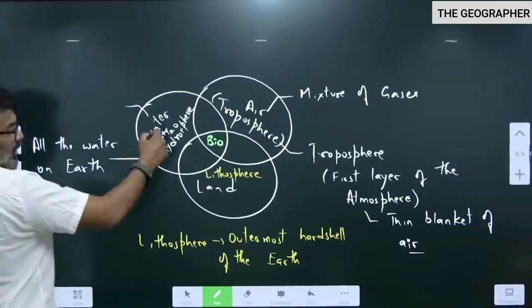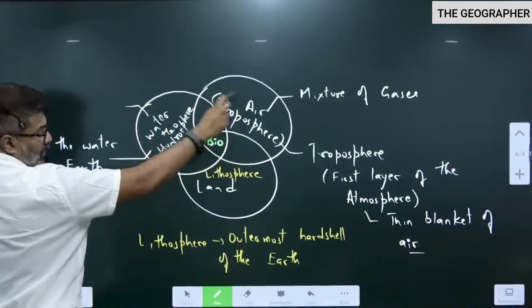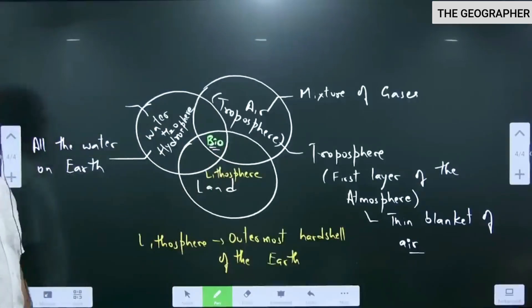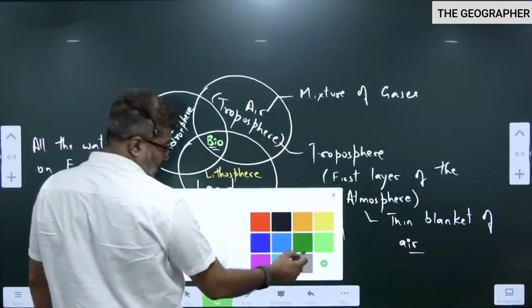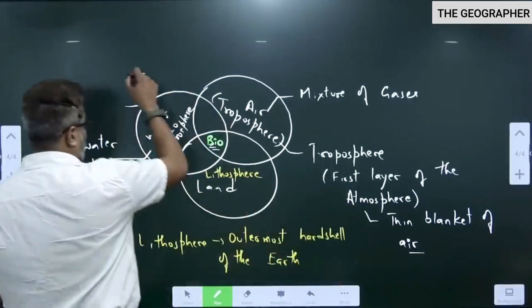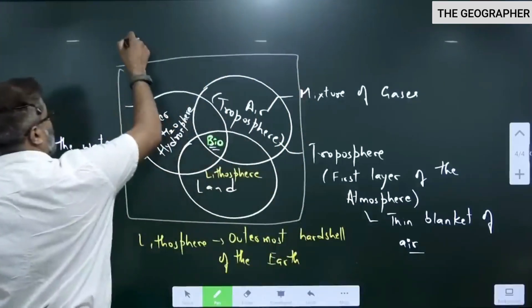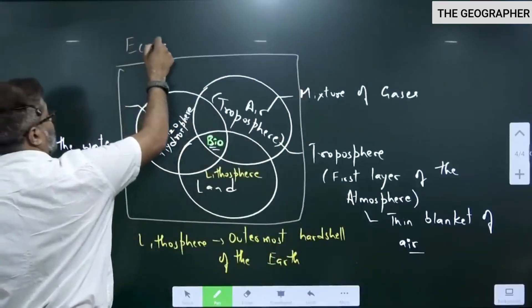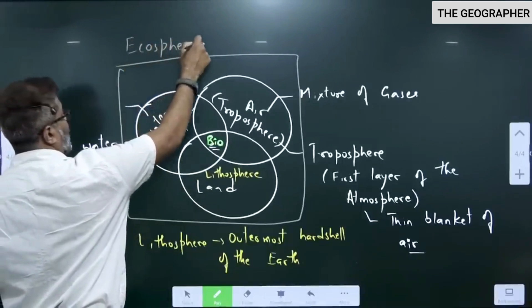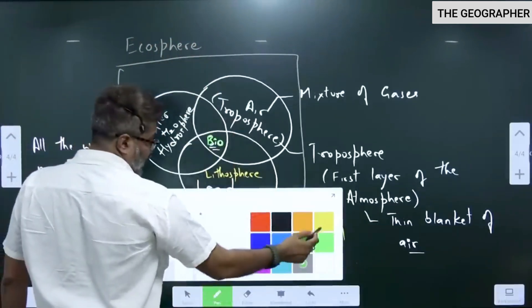Please remember land, water, air - part of all these three which support life is called as biosphere. We are all part of biosphere. Together, see this entire topic is our ecosphere. All these are part of our environment.